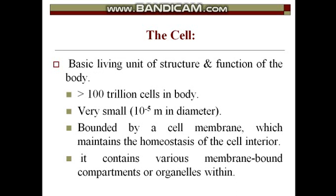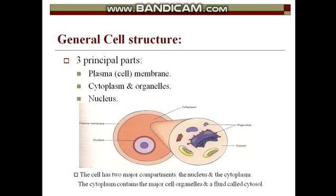Starting with the cell — the cell is the basic living unit for structure and function of the body. There are more than 100 trillion cells in the body. They are very small in size, bounded by the cell membrane, responsible for maintaining homeostasis in the interior of the cell. The cell contains various membrane-bound compartments and organelles in the cytoplasm. The three principal parts of the cell are the cell membrane, the cytoplasm, and the nucleus, which contains the nucleolus.